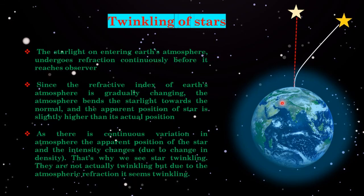That is all for today's class. I hope you have understood the concepts behind twinkling of stars, advanced sunrise, and delayed sunset — all phenomena caused by the refraction of light due to earth's atmosphere, i.e., atmospheric refraction. In the next lecture we will study the scattering of light: what scattering is, why the color of the sky is blue, and why danger signals are made in red color. Thank you, class.